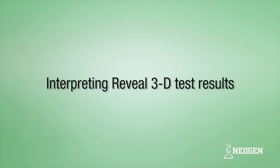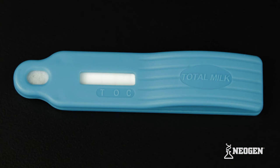Interpreting Reveal 3D test results. Note the device's T, O, and C zones. The T zone is for the test line, the O zone for the overload line, and the C zone for the control line.